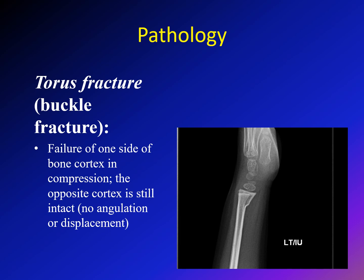So what is the pathology of torus fracture? The other name of the torus fracture is buckle fracture because the bone buckles. The pathology is failure of one bone cortex in compression while the opposite cortex is intact — so one cortex has no angular displacement, and the other cortex has failed in compression. As you can see here in this lateral view of the wrist, this cortex of the radius is intact with no interruption, while this cortex here has failed in compression — it has buckled.